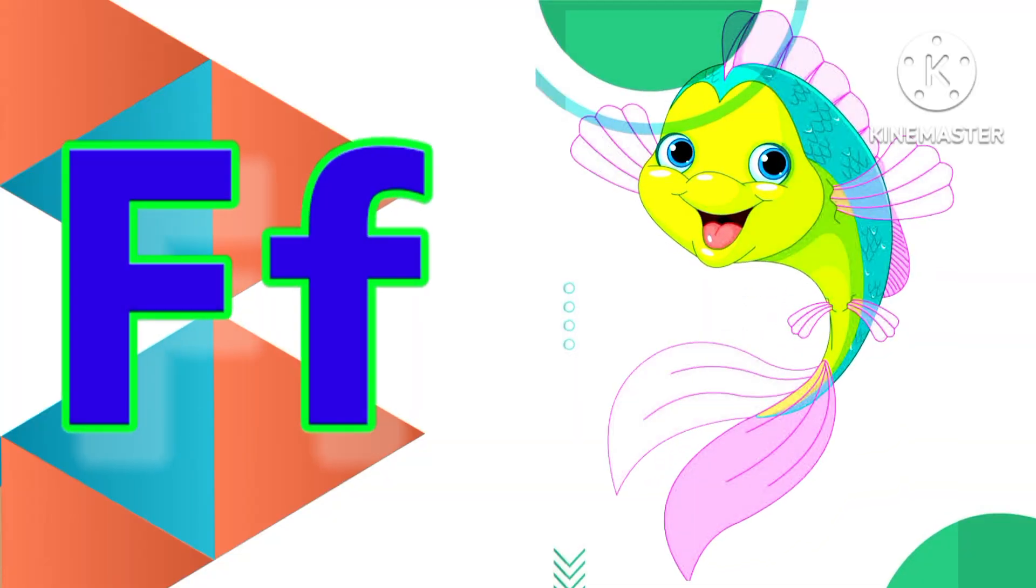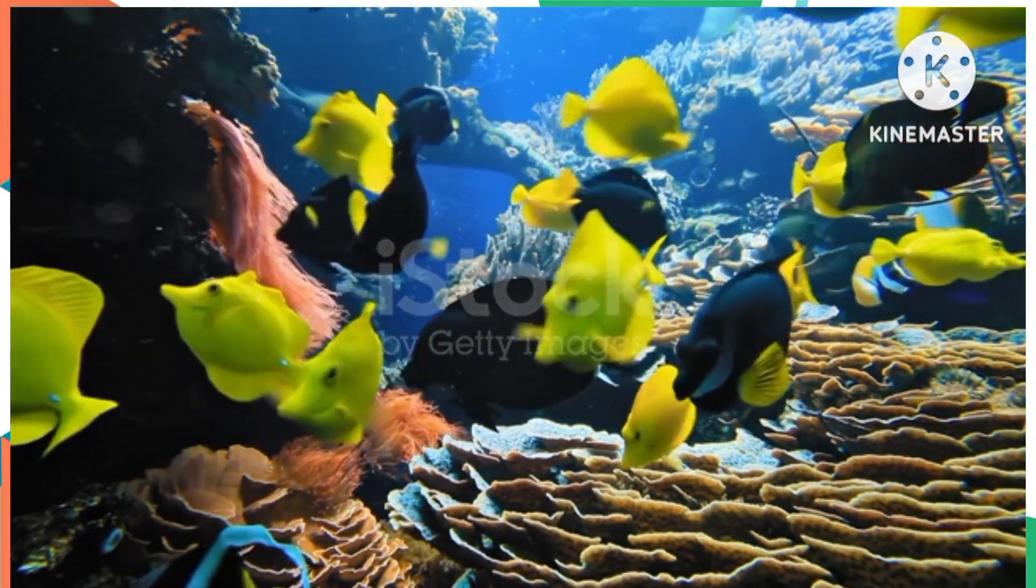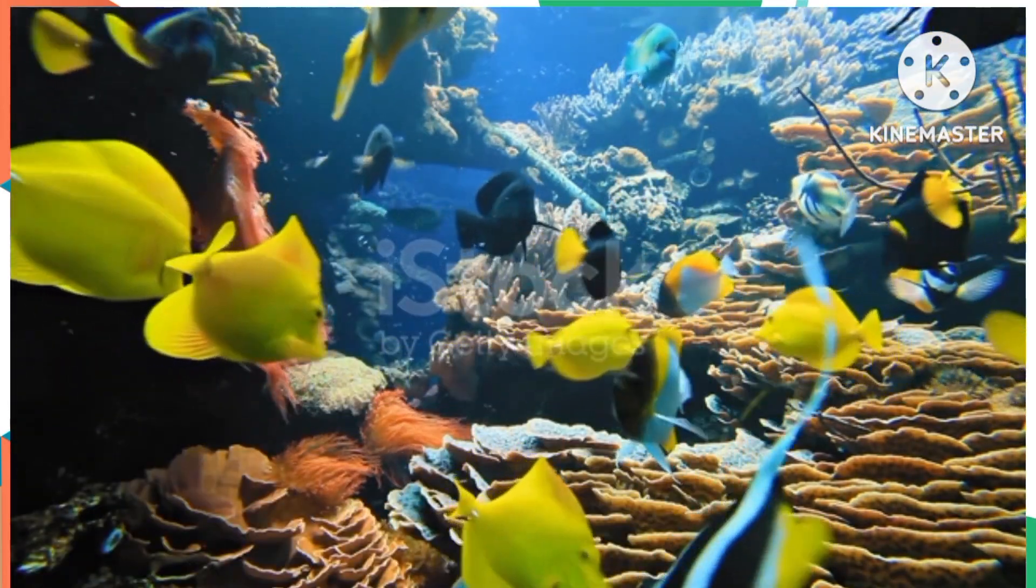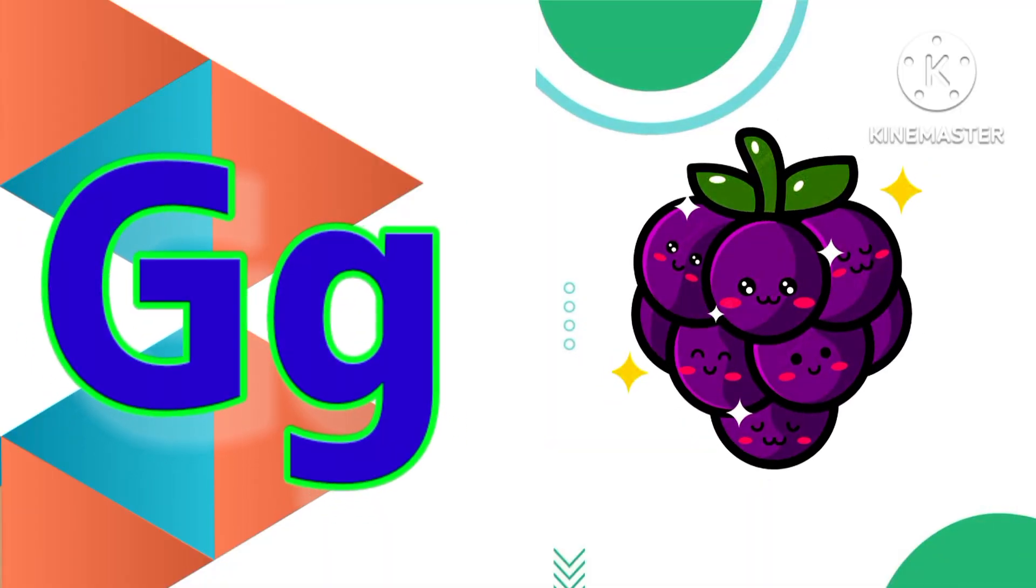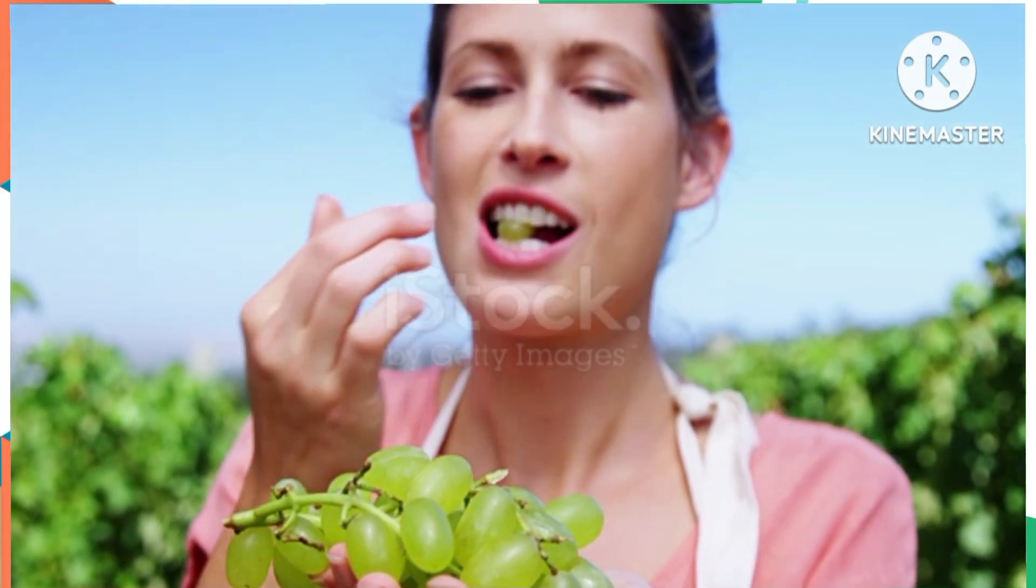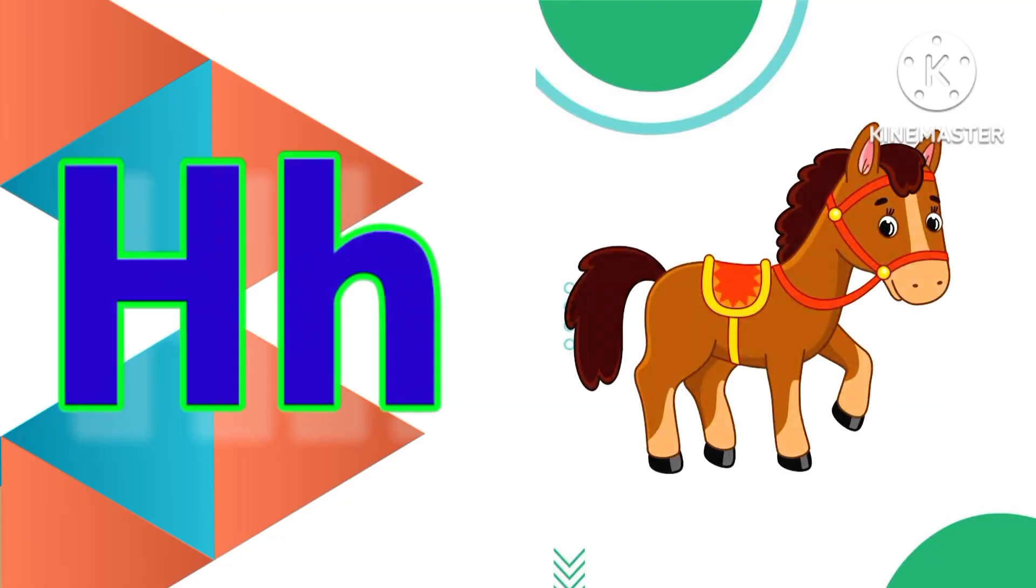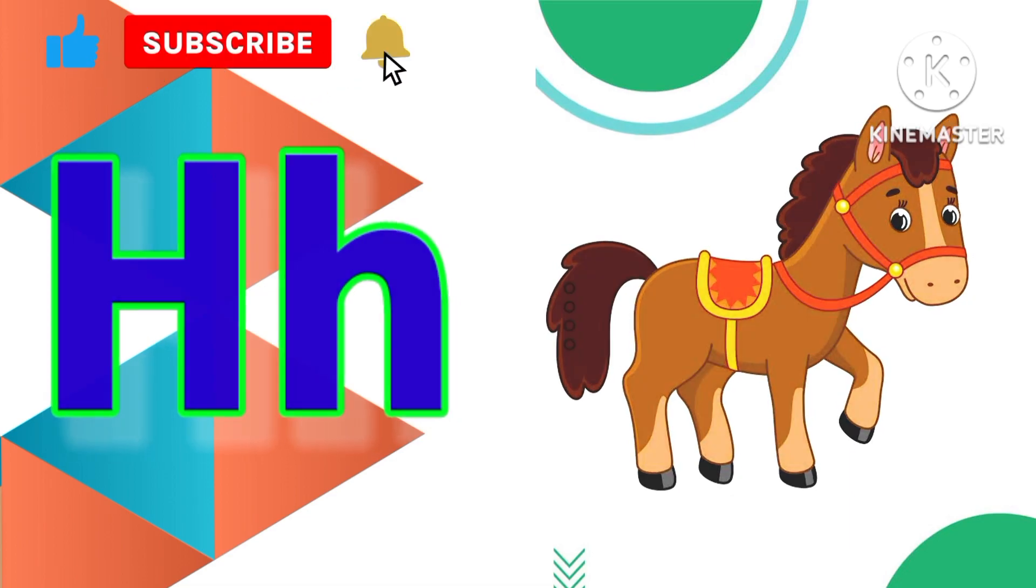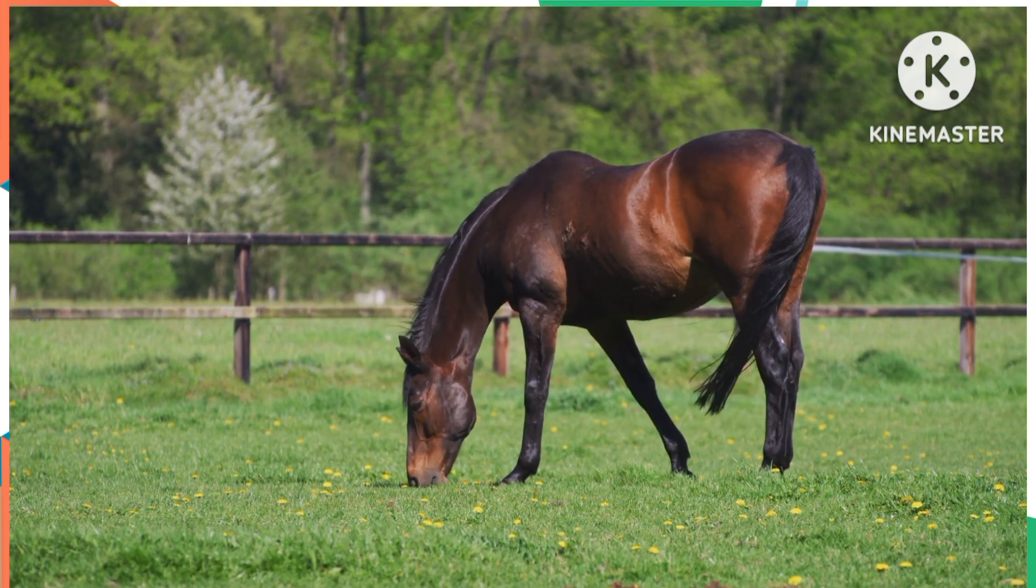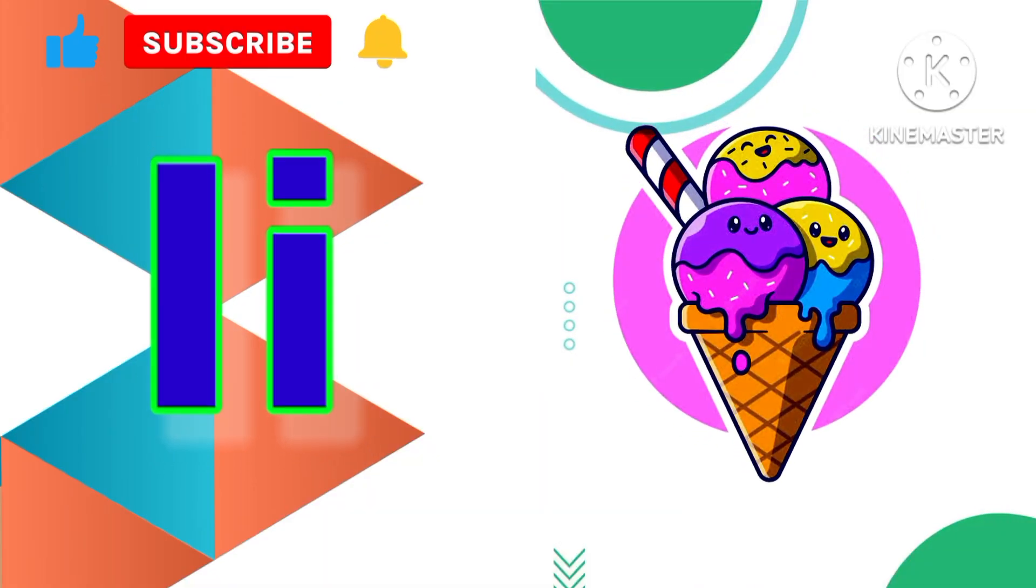F is for Fish. G is for Grapes. H is for Horse. I is for Ice Cream.